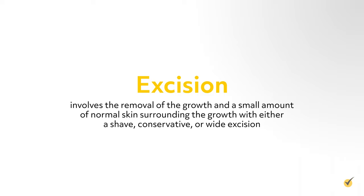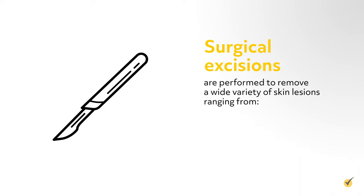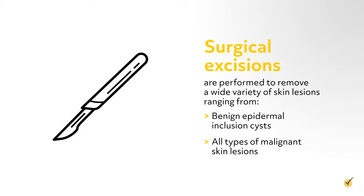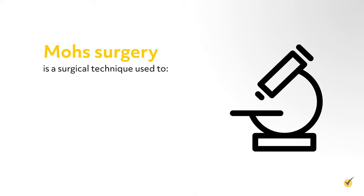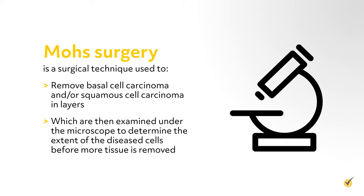Excision involves the removal of the growth and a small amount of normal surrounding skin with either a shave, conservative, or wide excision. Surgical excisions are performed to remove a wide variety of skin lesions, ranging from benign epidermal inclusion cysts to all types of malignant skin lesions. Mohs surgery is a surgical technique used to remove basal cell carcinoma and/or squamous cell carcinoma in layers, which are then examined under the microscope to determine the extent of diseased cells before more tissue is removed.